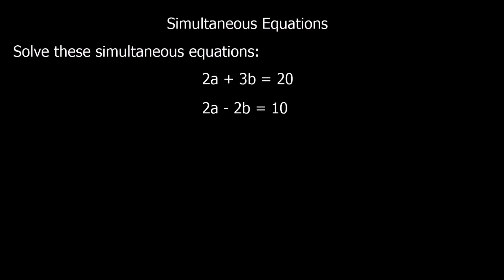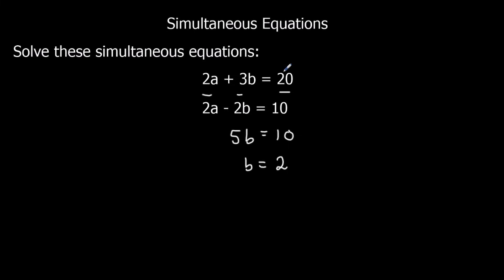This time we've got the a's the same — I've got 2a and 2a in both equations. So I'm going to eliminate the 2a's. They're both positive so I'm going to eliminate them by taking away. 2a take away 2a is nothing. The a's are gone. 3b minus minus 2b — minus minus means plus — so 3b plus 2b is 5b, and 20 take away 10 is 10, so b is equal to 2.